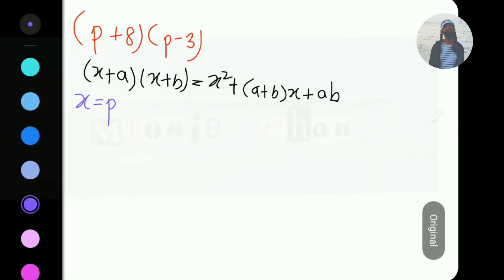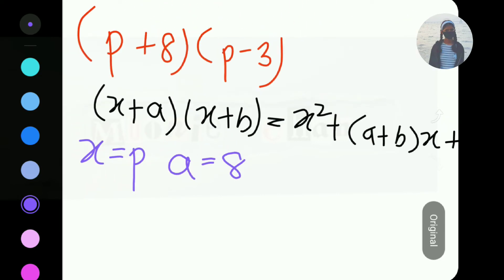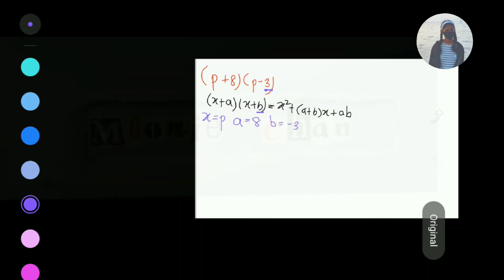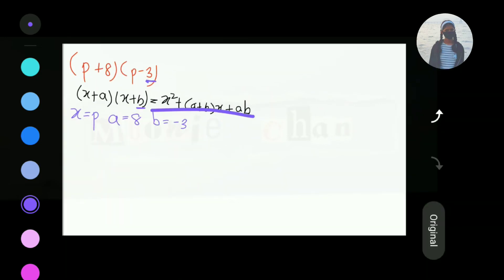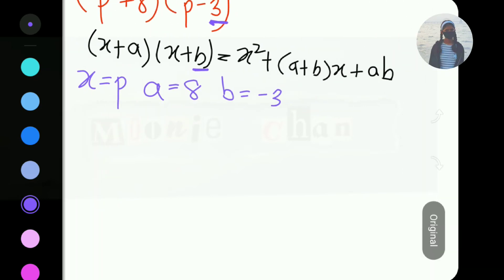Now, A equals to 8, right? So, let's write that. A equals to 8. And we can see that B equals to minus 3. So, B equals to minus 3. Okay, now we have the formula, we have the values. It will be easy for us to solve the sum. Okay, we'll write the formula but we are going to substitute it with the values that are given in the question.